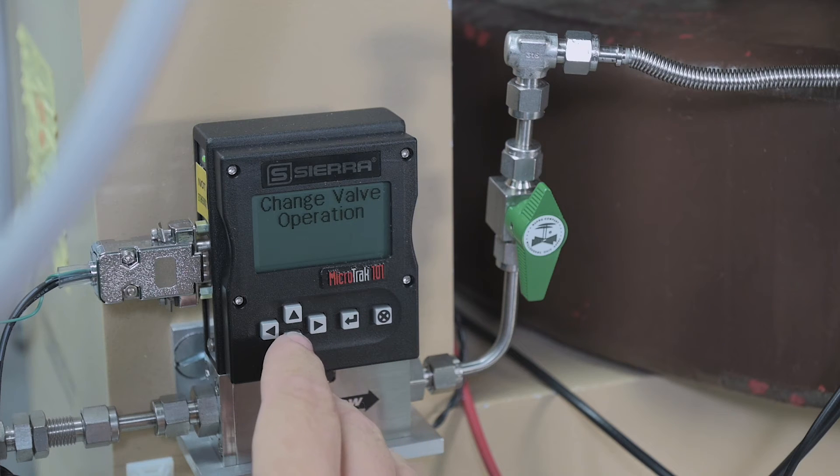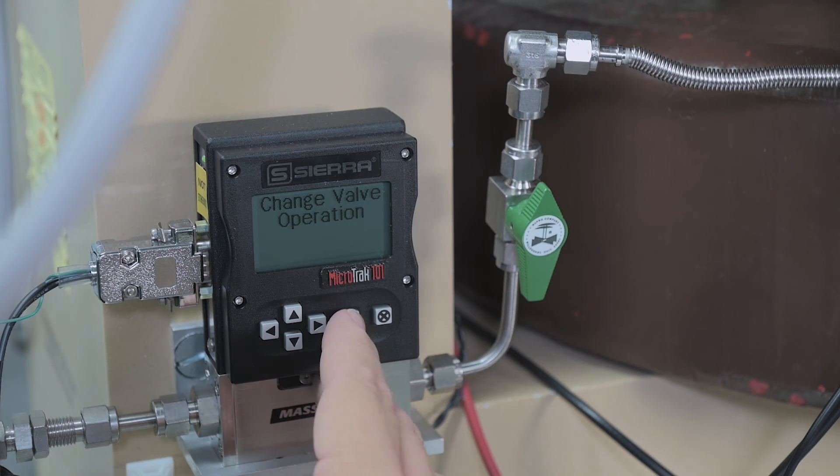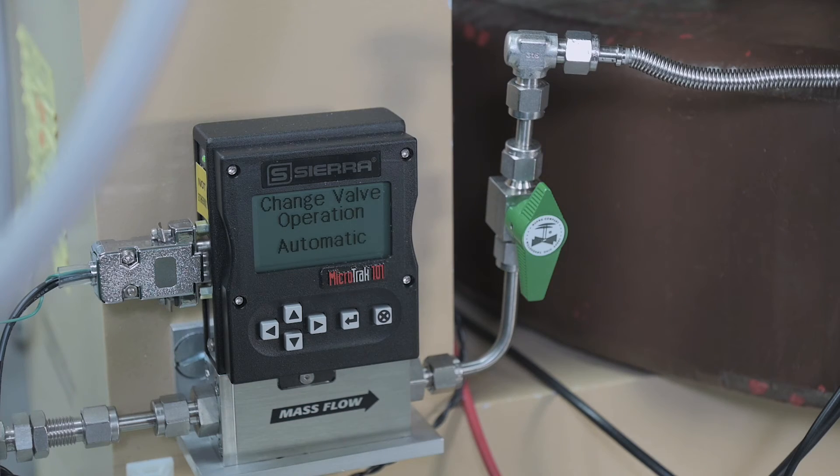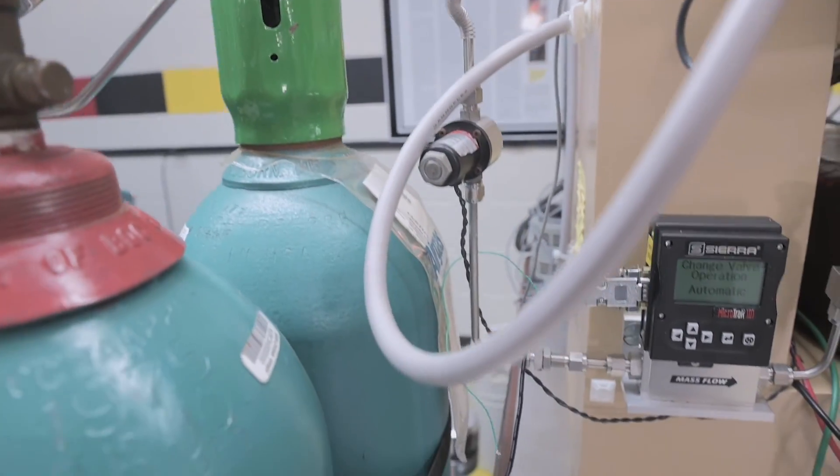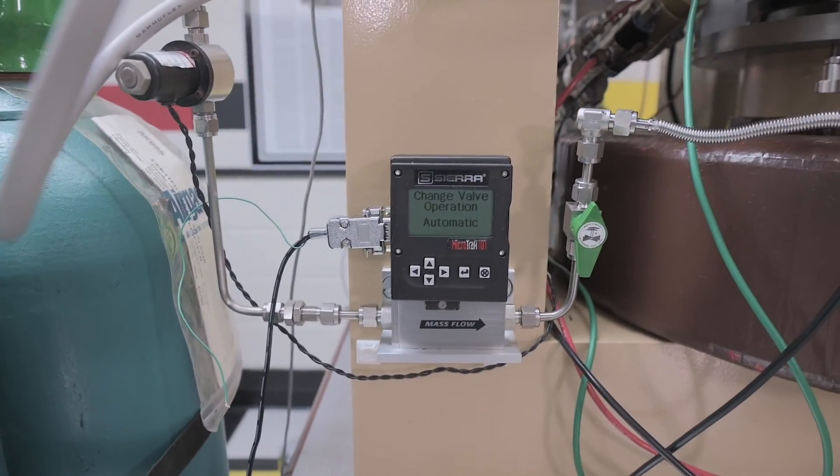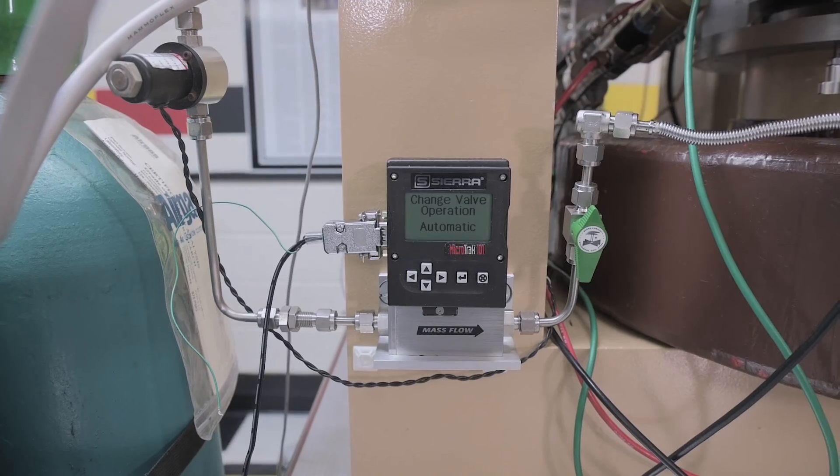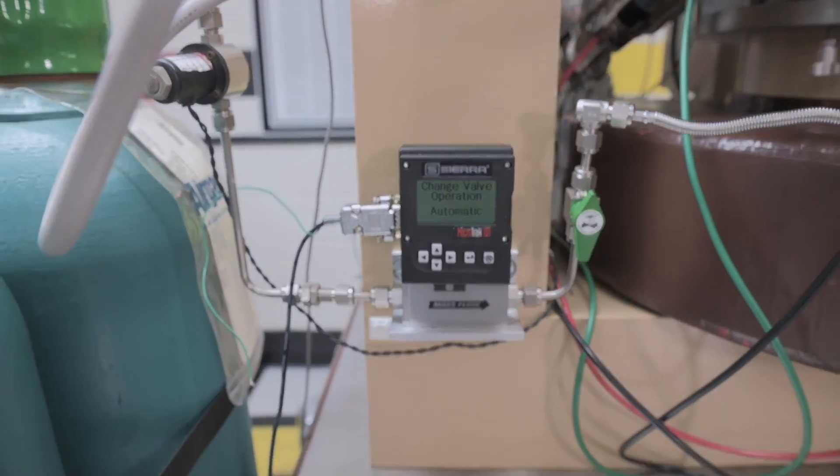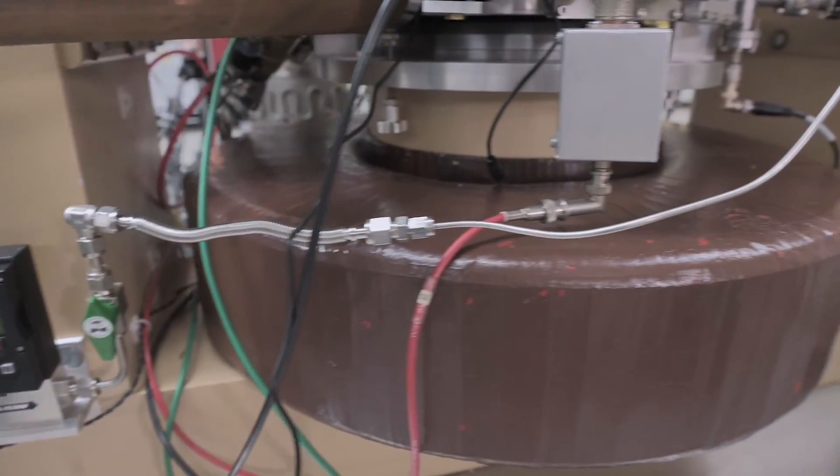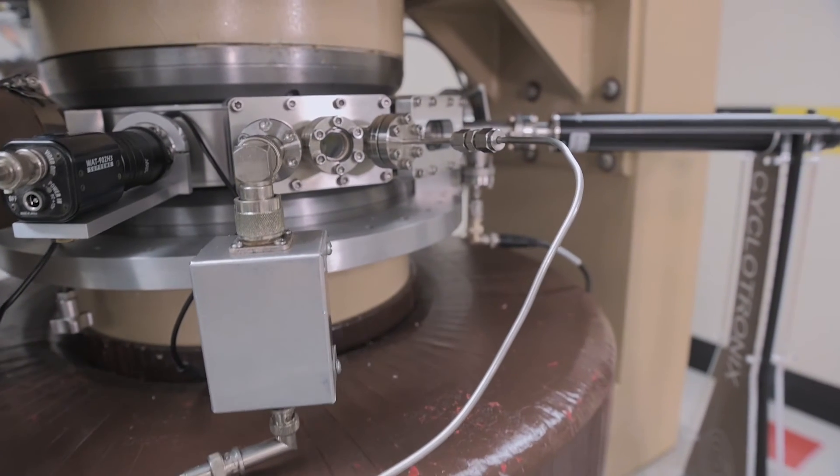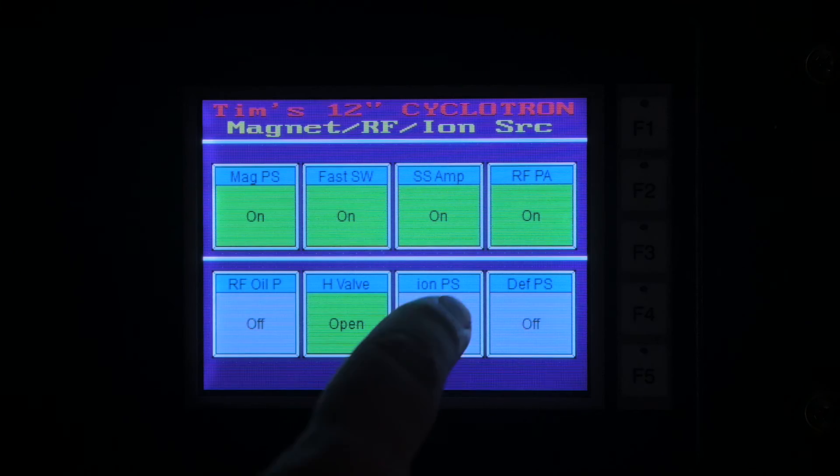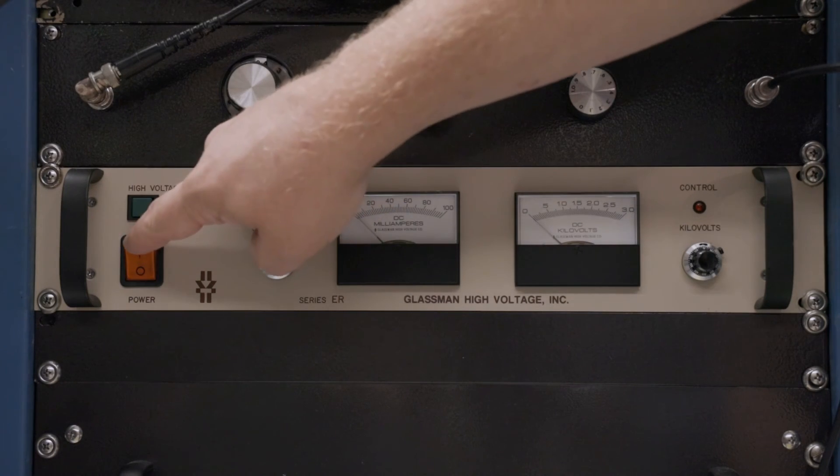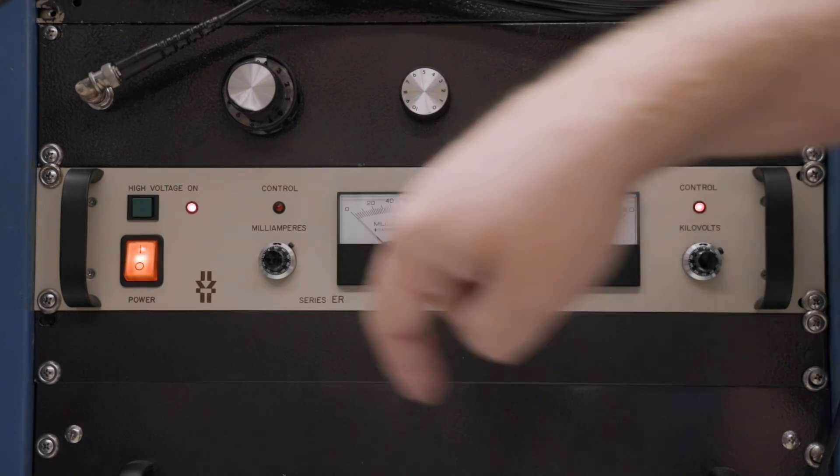By selecting automatic operation, the mass flow controller will automatically regulate the gas flow. The mass flow controller's output is plumbed into the ion source gas delivery line. With the magnet on at a minimal field, the RF running, and the hydrogen gas flowing, all that is left is to turn on the ion source's high voltage. We ramp up the power supply's output voltage until an arc is struck.